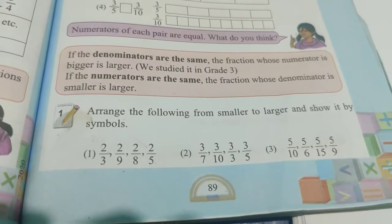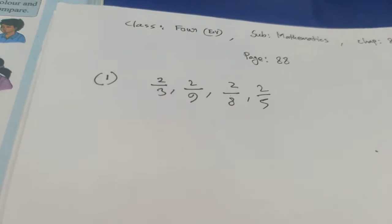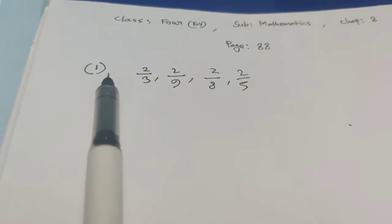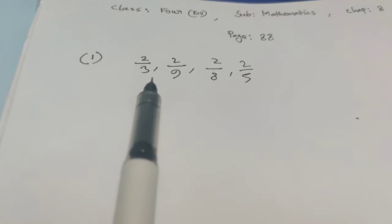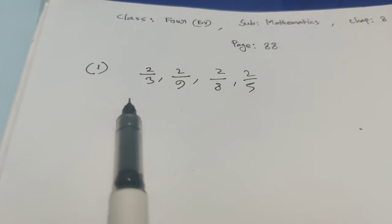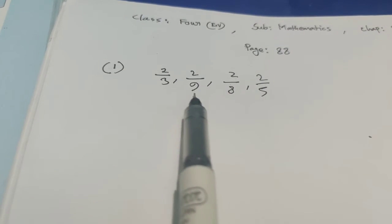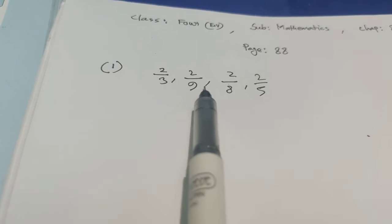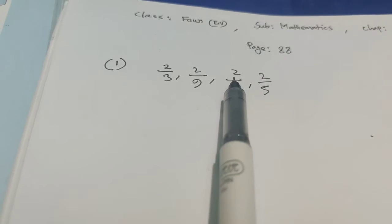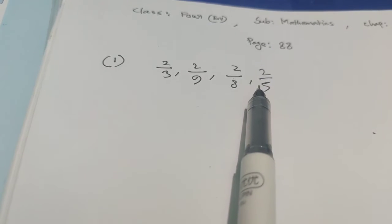Now let's arrange from smaller to larger. Since the fraction with the larger denominator is the smaller one: nine is greater than eight, so two by nine is smaller than two by eight. Eight is greater than five, so two by eight is smaller than two by five.